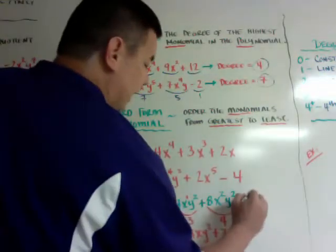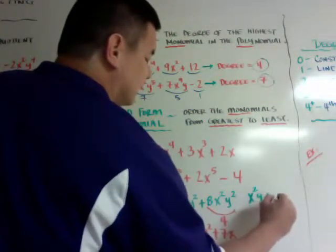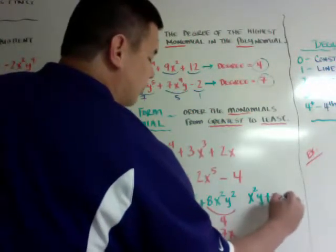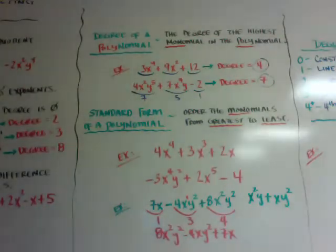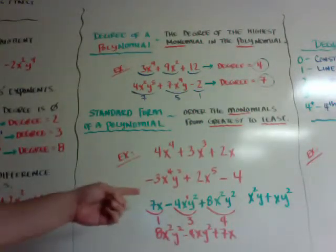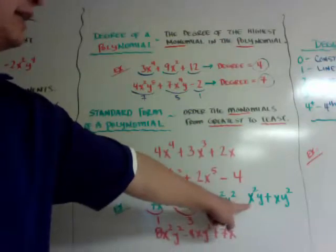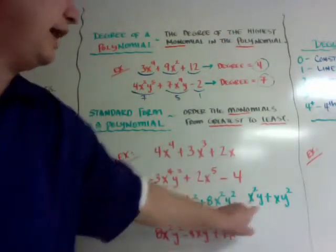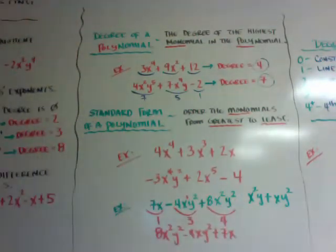If it turned out that they had the same degree, you would go by alphabetical order. So for example, if you had x²y plus xy², you can see that they're both degree three, but you go alphabetical — the x has a higher degree in that term than the other one.